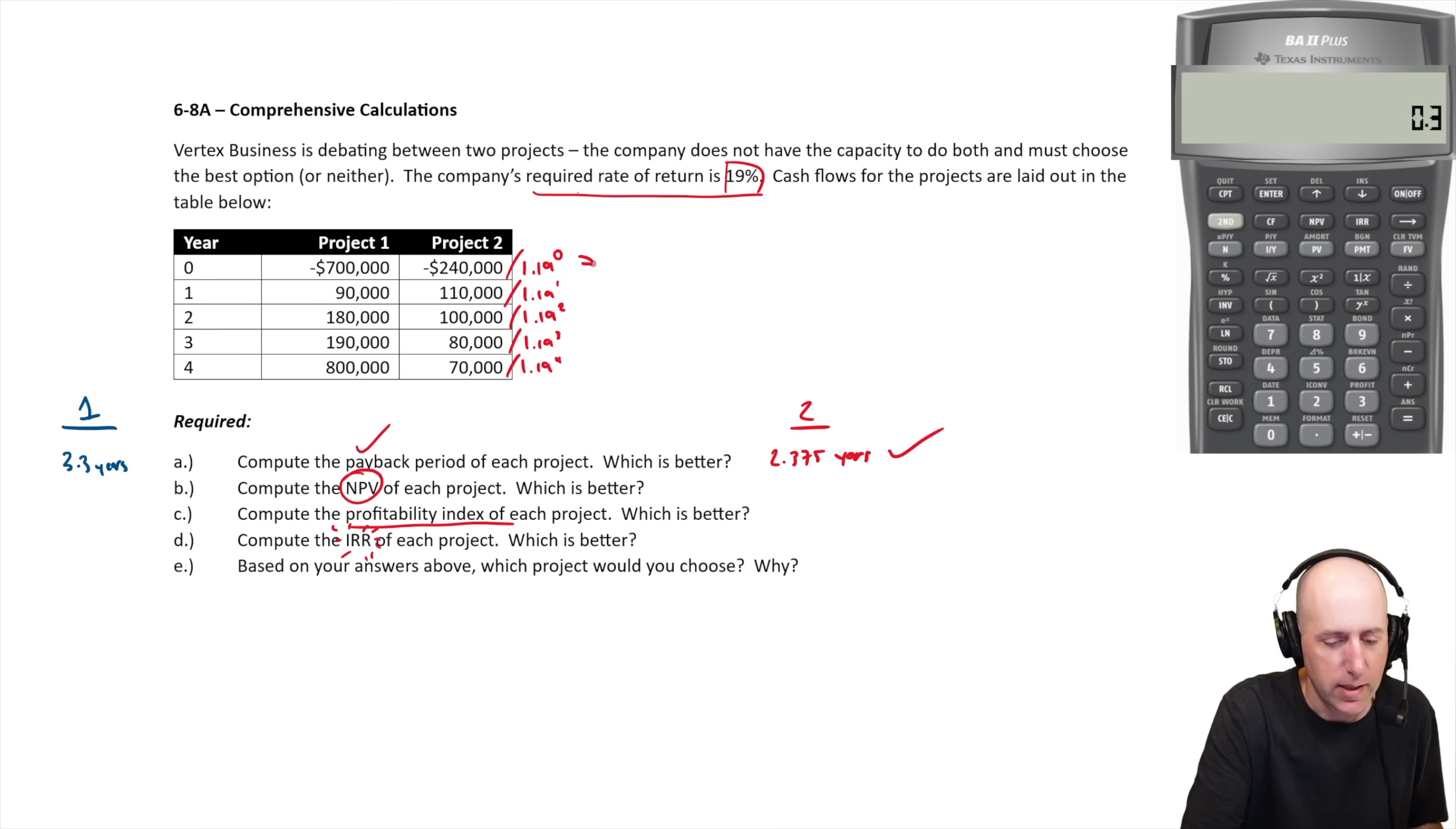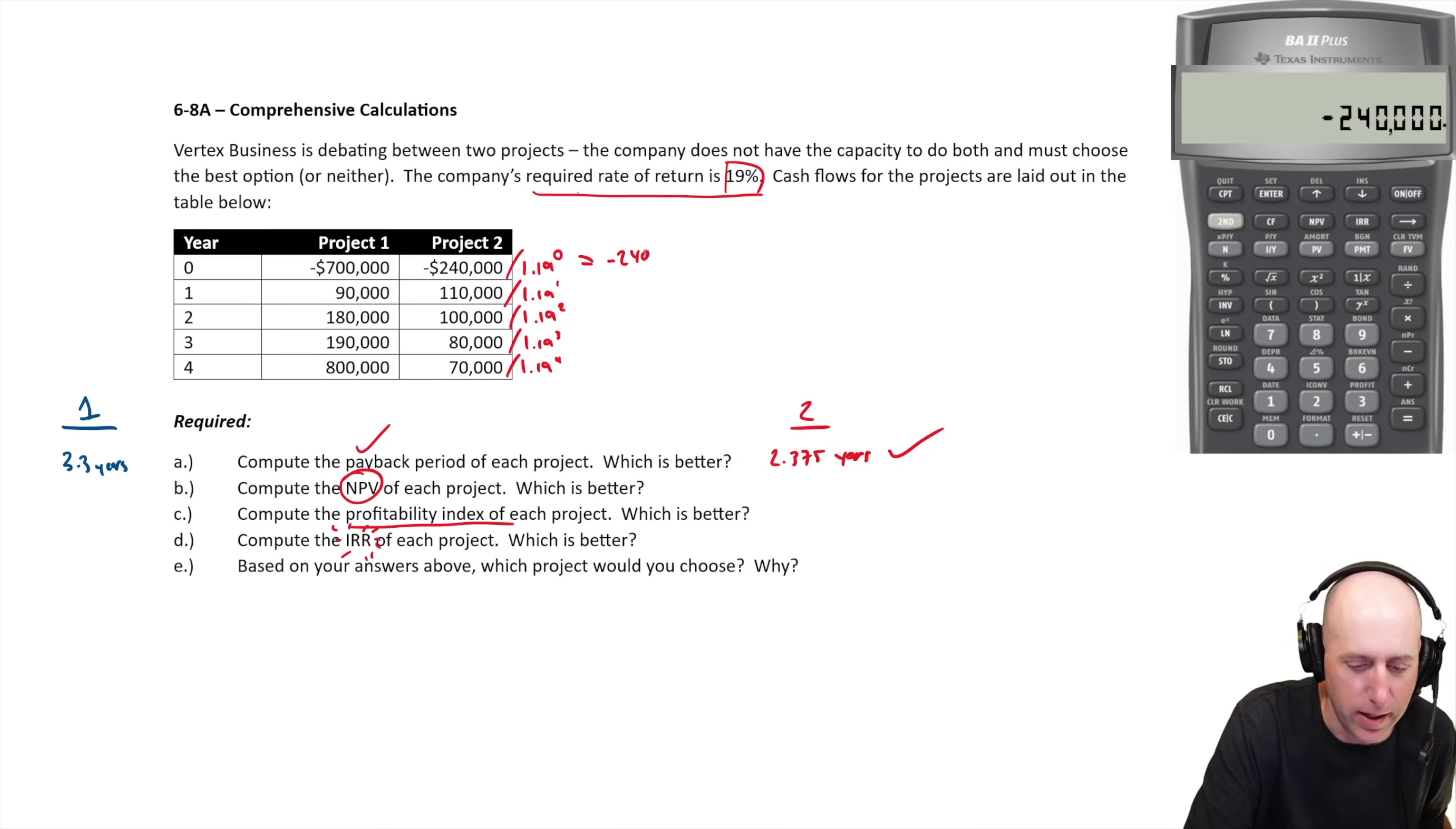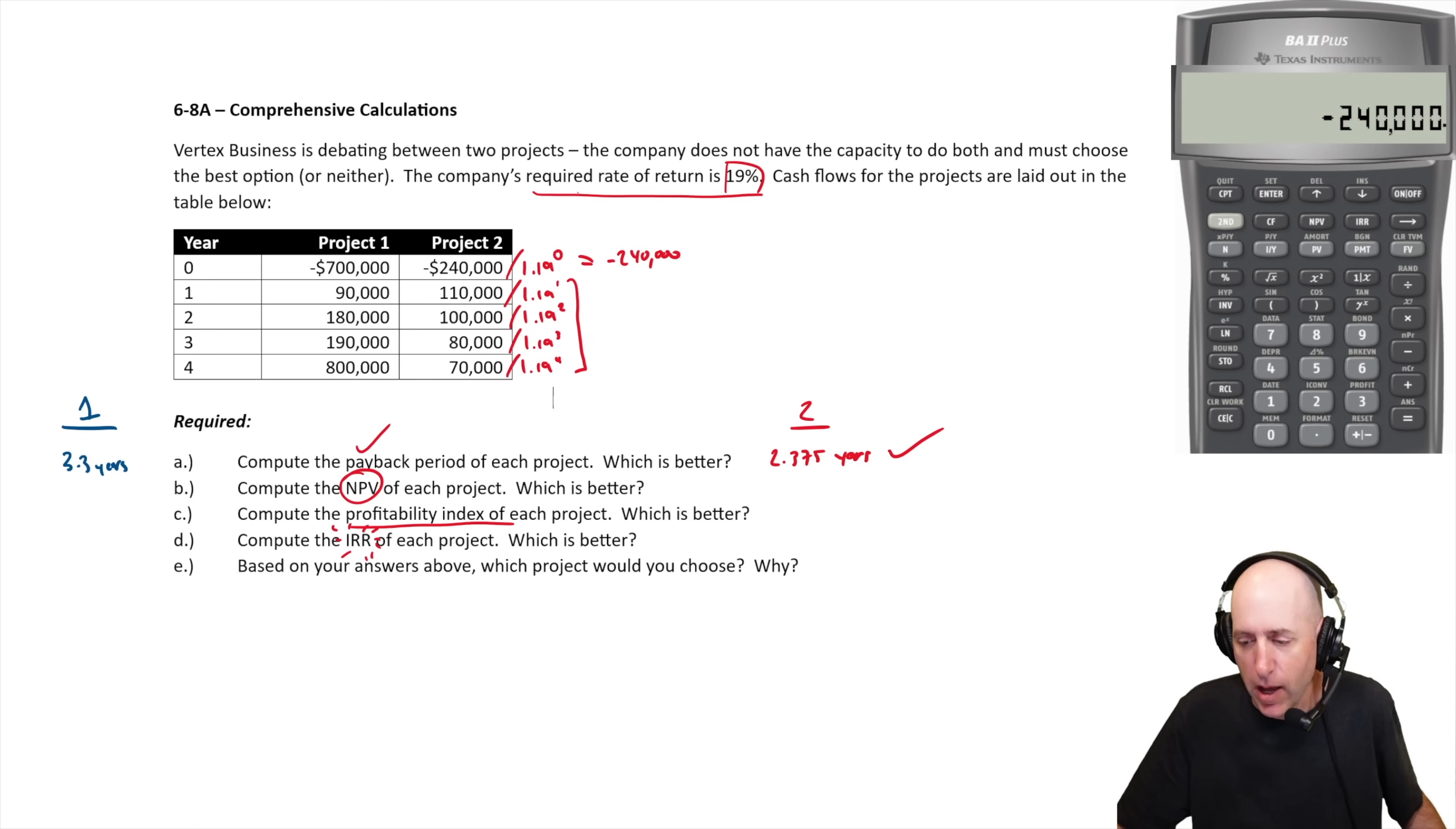Now 1.19 to the zero is one. So 240,000 negative divided by one is 240 negative, you don't need to do that step, right? I just was showing you how it works. So there's our cash outflow. I'm going to do the present value of all of these cash inflows in the financial calculator, you can just do it like add them up, do the math. I'll do it in the financial calculator, save us all some time.